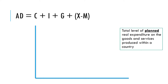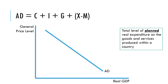We've already looked at aggregate demand, its components, and the aggregate demand curve, which plots against the axes of general price level and real GDP the total level of planned expenditure on goods and services produced within a country given the price level.